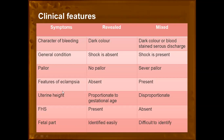Regarding clinical features, signs and symptoms are divided between the revealed type and the concealed or mixed types, which share more or less the same presentation. In the revealed type, bleeding is dark colored; in mixed or concealed, there may be blood-stained serous discharge. Shock is absent in revealed but present in mixed. Pallor is absent in revealed but severe in mixed. Features of eclampsia are absent in revealed but present in mixed. Uterine height is proportionate to gestational age in revealed but disproportionate in mixed and concealed.